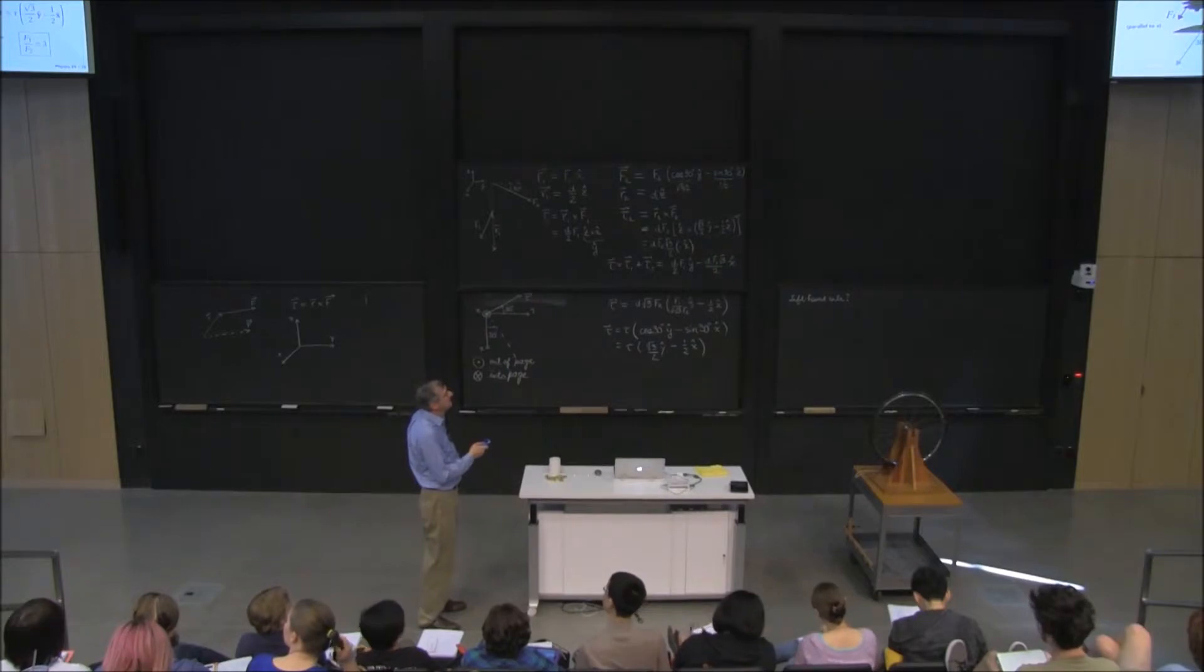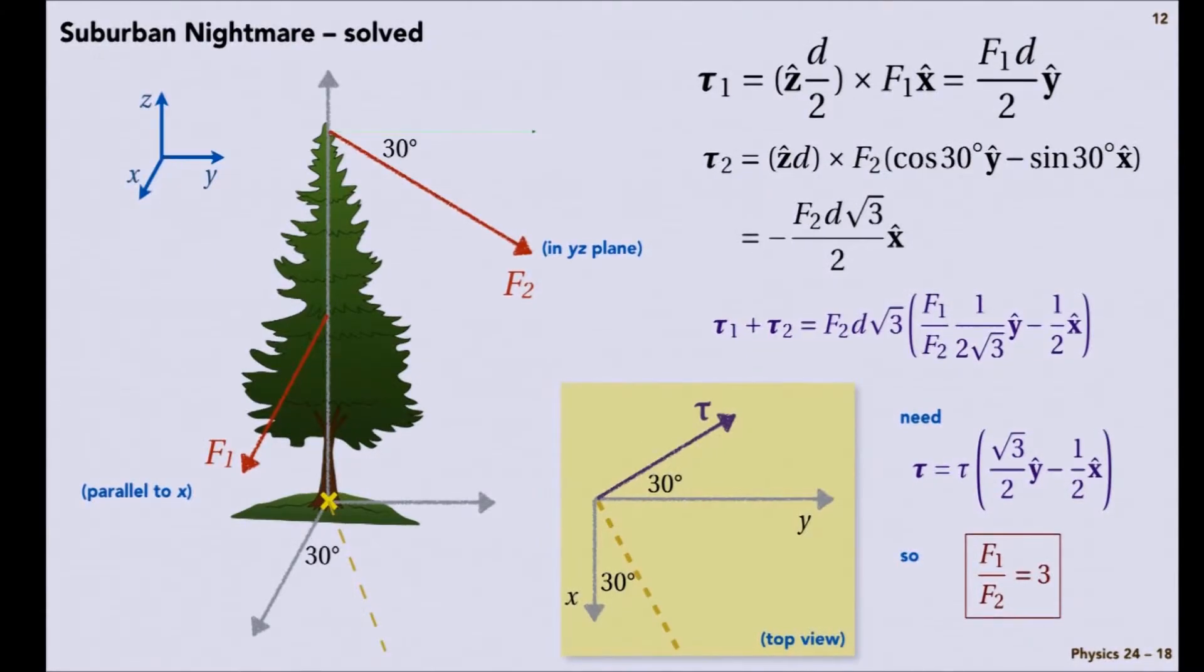is the direction that we need the torque to point in just arbitrarily set by using a right-hand rule? And instead, if we use the left-hand rule, we would get, well, what would we get? So if we use the left-hand rule, then what would happen to the direction of the torque from f1?